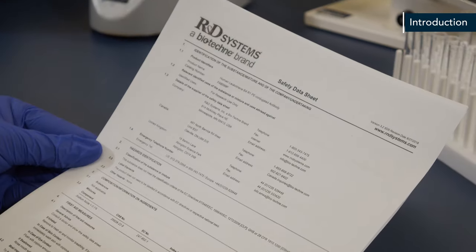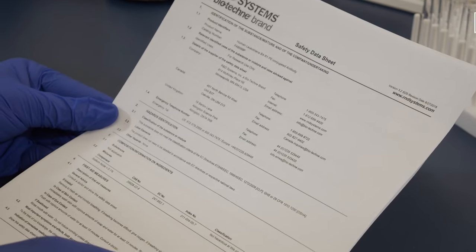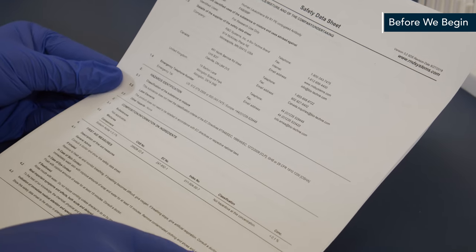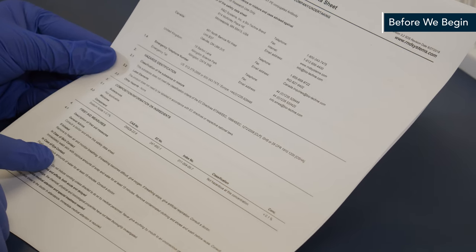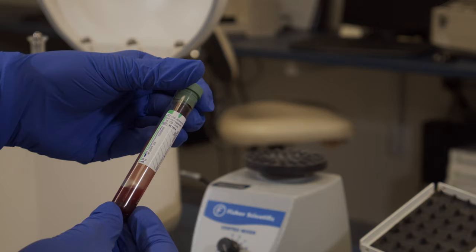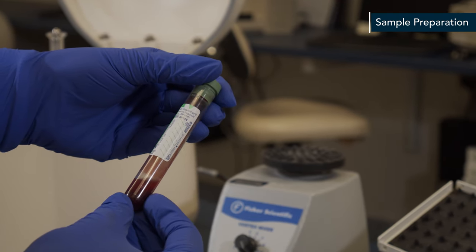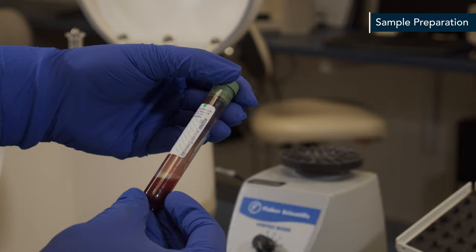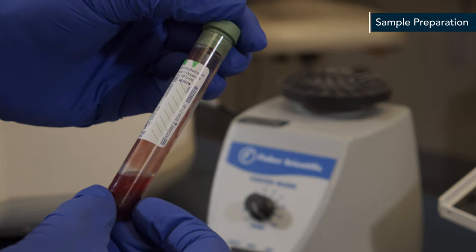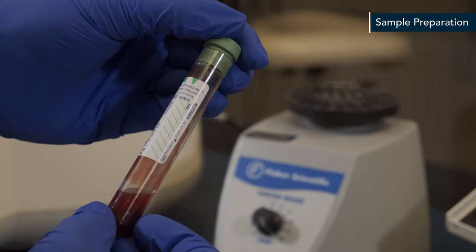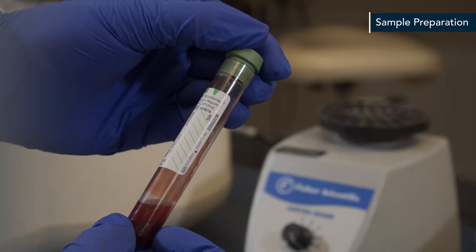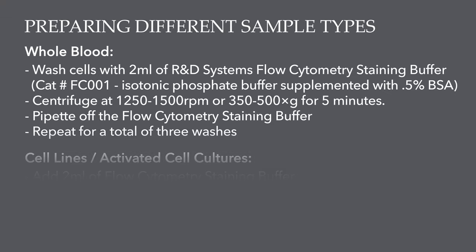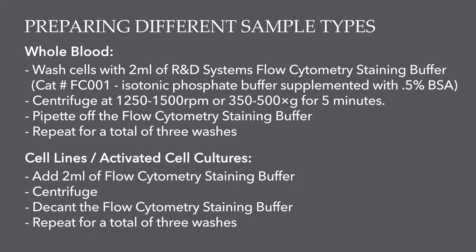There are a few things to keep in mind before we begin. First, be sure to wear personal protective equipment and refer to the safety data sheet on our website prior to use. Next, if staining peripheral blood cells, collect the blood in evacuated tubes containing EDTA or heparin as the anticoagulant. If you're using blood samples, cell lines, or activated cell cultures, additional sample preparation is required. Follow your protocol and the steps on the screen to prepare your samples.